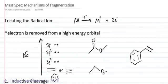Let's look at several mechanisms of fragmentation when forming ion fragments in a mass spec. First thing we need to do is locate the position of the radical ion. Where is it most likely to be after we ionize?